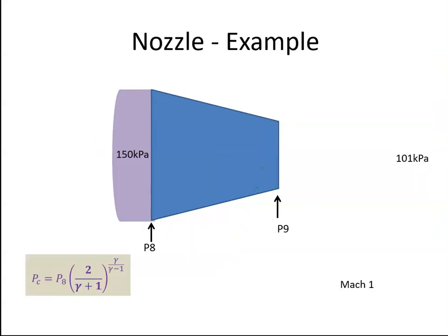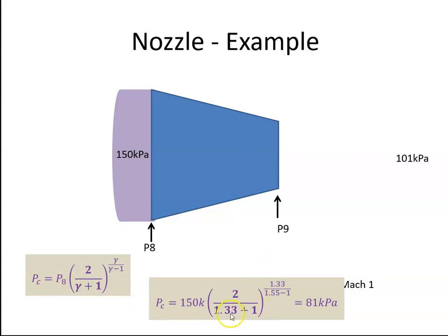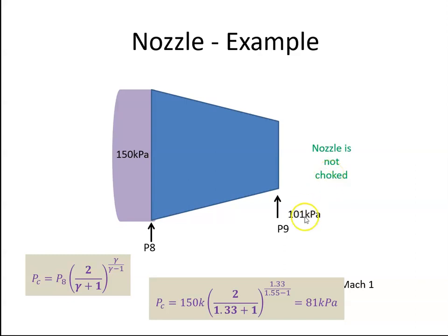Let's work through an example. Say we have a nozzle with an inlet pressure of 150 kilopascals and ambient pressure of 101 kilopascals. Using the critical pressure equation with gamma equal to 1.33, we get a critical pressure of 81 kilopascals. Since 81 is below 101 kilopascals, the air would need to expand all the way down to 81 kPa before reaching supersonic flow, but the ambient pressure stops it at 101 kPa. Therefore the nozzle is not choked and the exit pressure is simply atmospheric pressure.